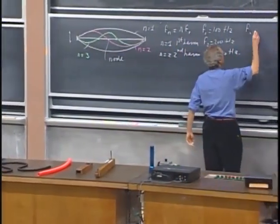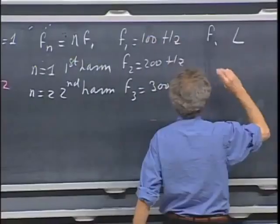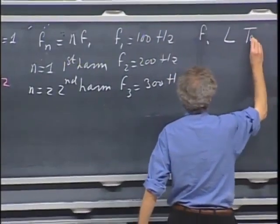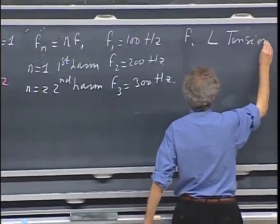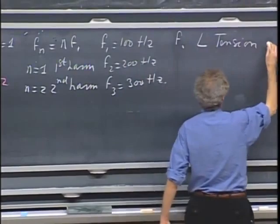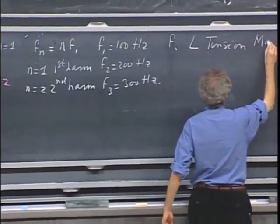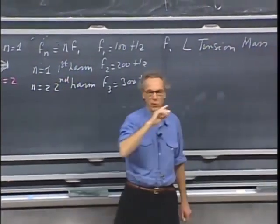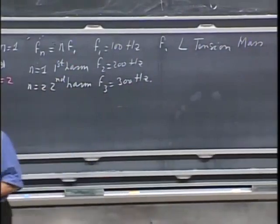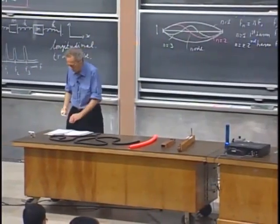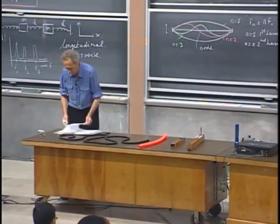F1 depends on the length of the string, on the tension. I will write tension. Don't confuse this with periods. And it depends on the mass of the string. Without going into the detail how the dependence is, these are the parameters that determine the first harmonic.